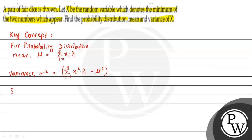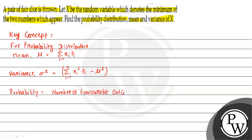The next concept we are using is probability. Probability is given as the number of favorable outcomes divided by the total number of outcomes.